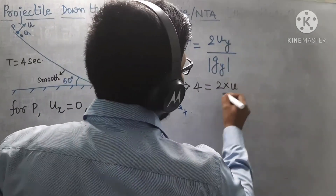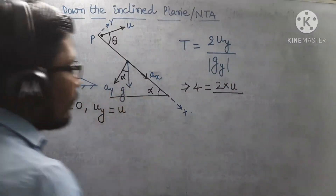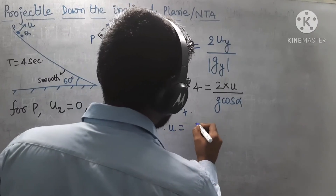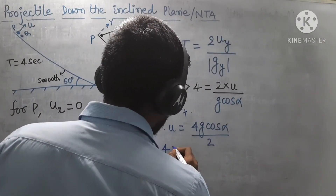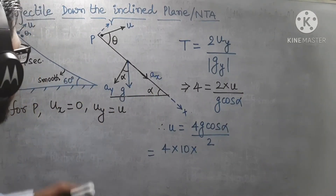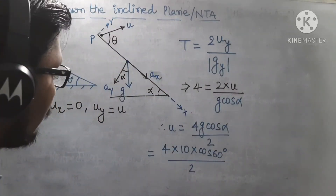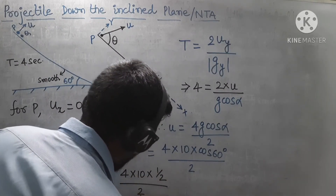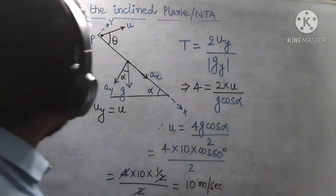We need to find U, where gy = g cosα. So: 4 = 2U / (g cosα), which gives U = 4g cosα / 2 = 2g cosα. Plugging in values: g = 10, α = 60°, so cos60° = 0.5. Therefore U = 4 × 10 × (1/2) / 2, and after cancellation, U = 10 m/s.